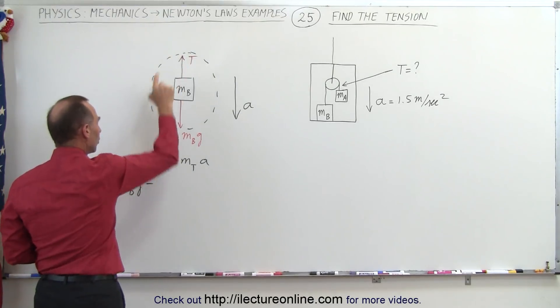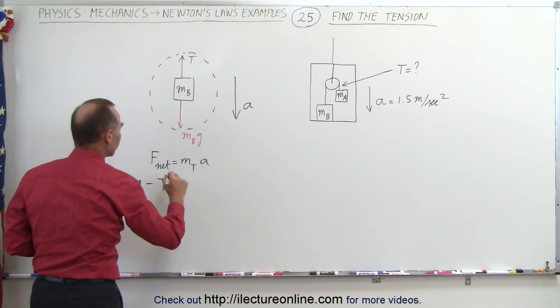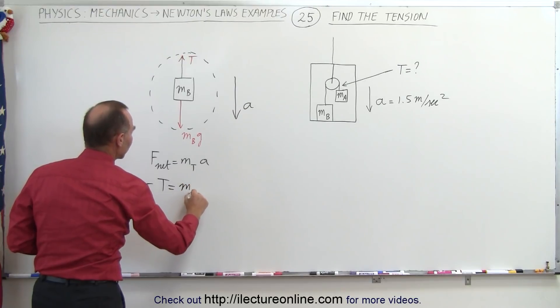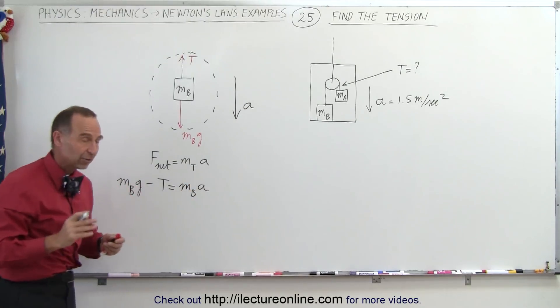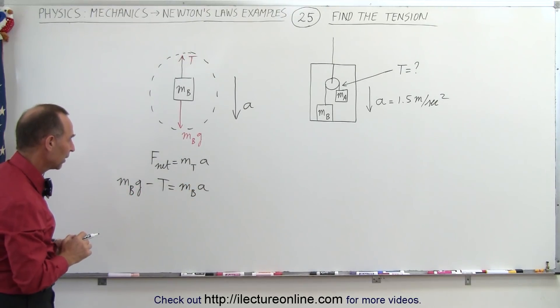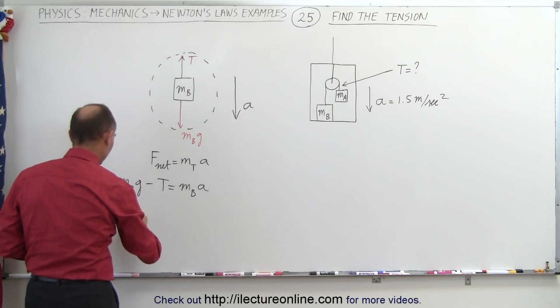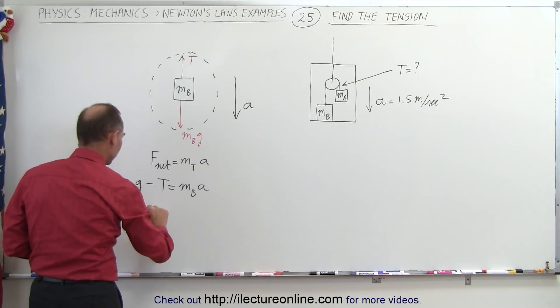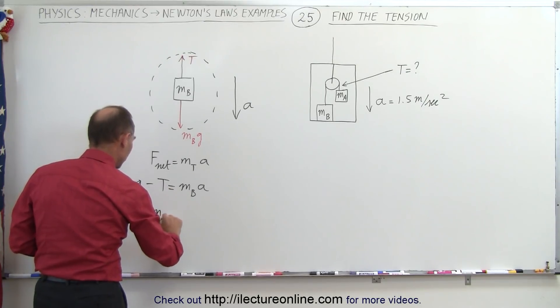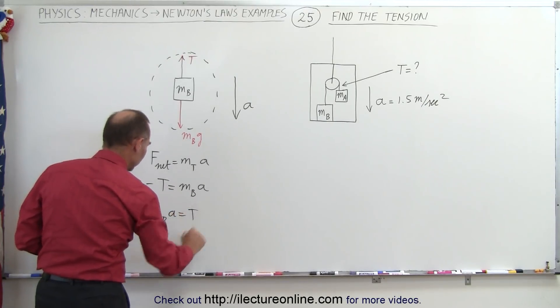Minus the force opposing, which is the tension in the string, should equal m_b times the acceleration that m_b is experiencing. So now we can go ahead and move this to the right and this to the left, so we have m_b*g minus m_b*a equals the tension. I can take my equation and turn it around: the tension equals m_b*g minus m_b*a.